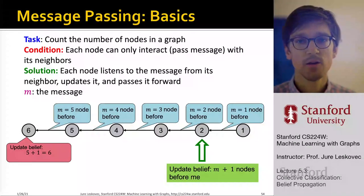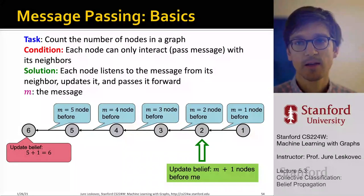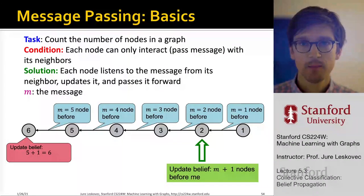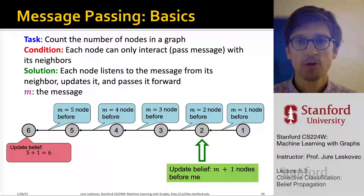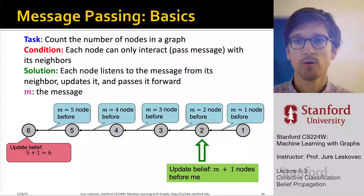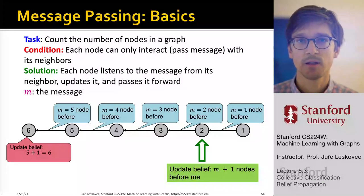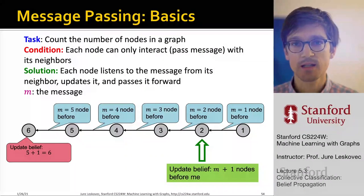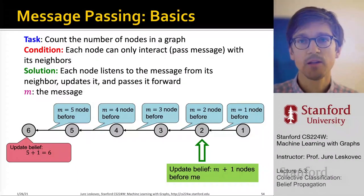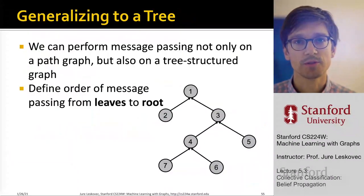We could even take this message and pass it back to node 1, but the main idea is that each node collects a message from its neighbor, updates it, and passes it forward. That's the core operation — you can see how this works nicely on a line graph with the proper ordering of the nodes.